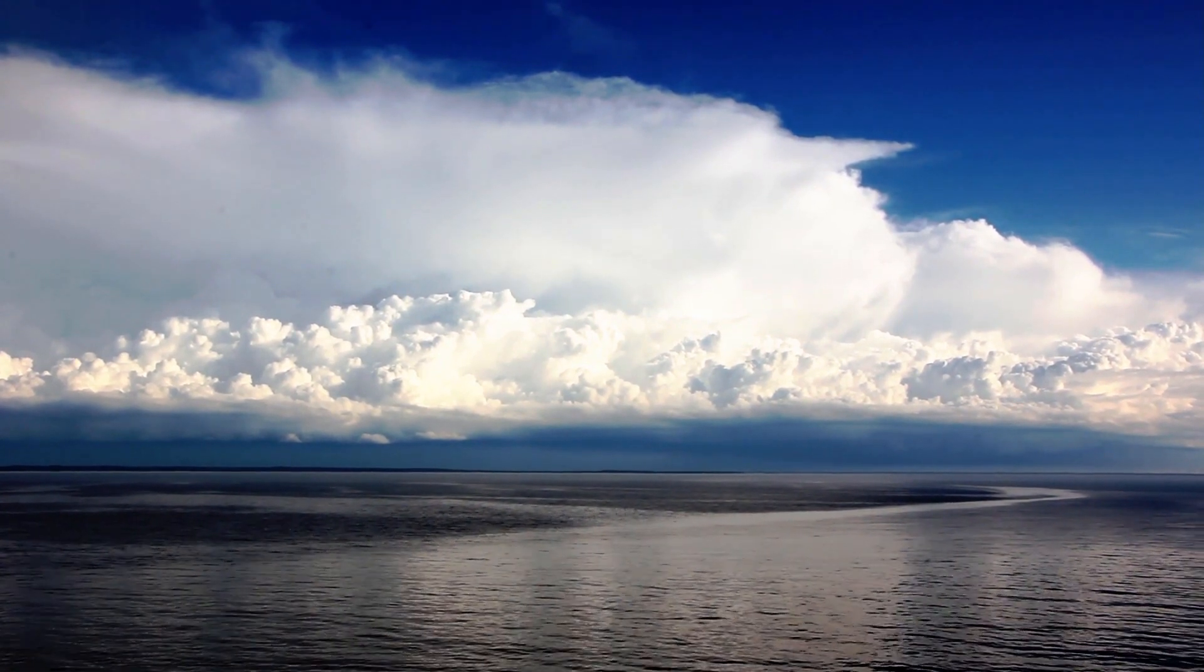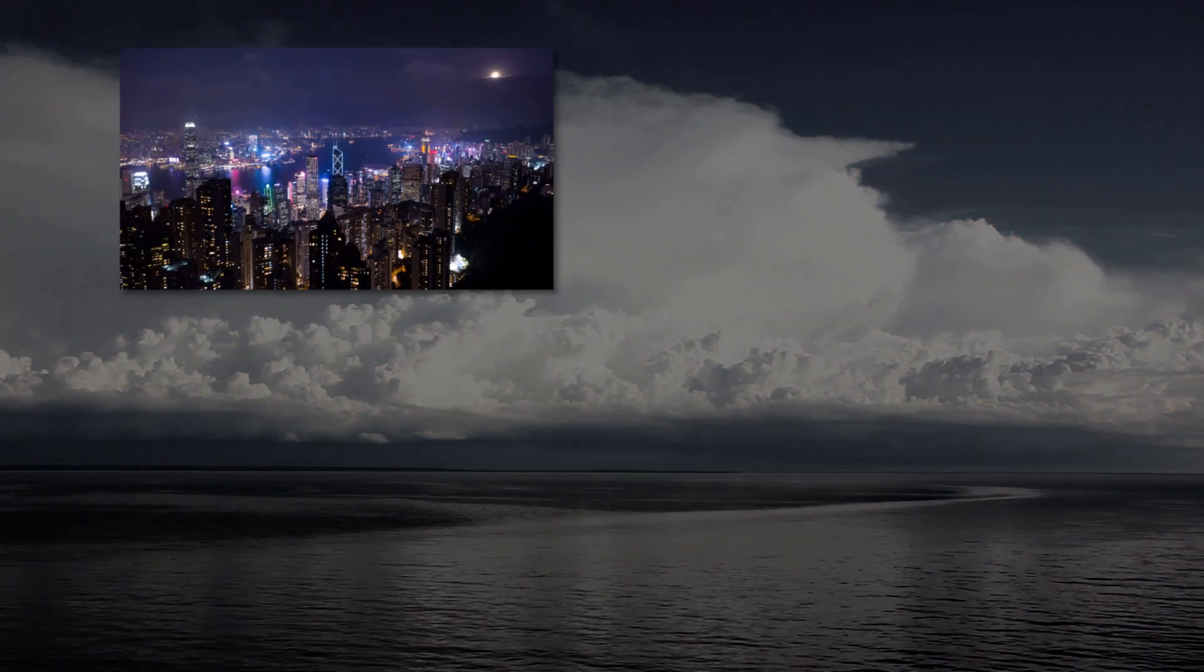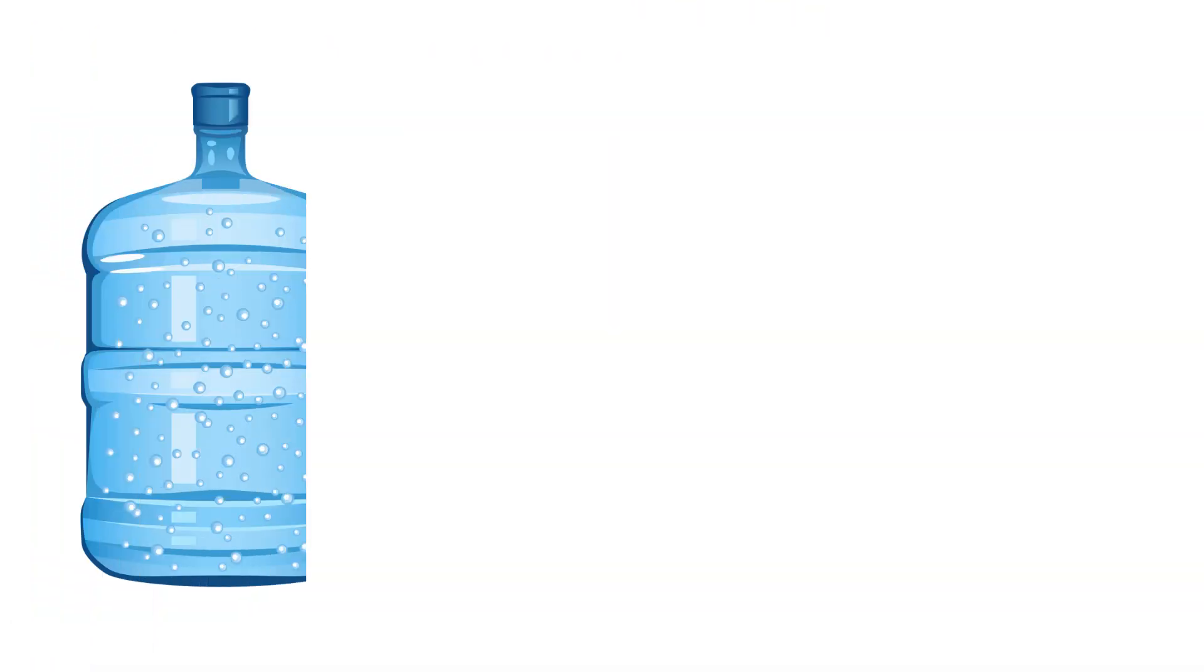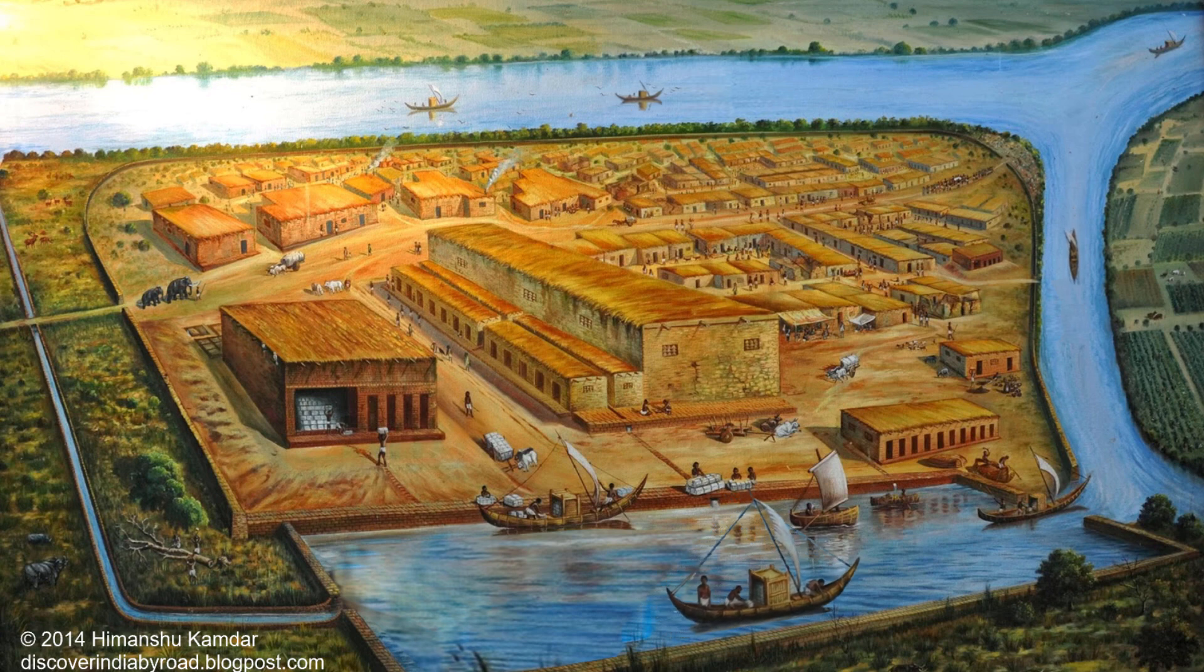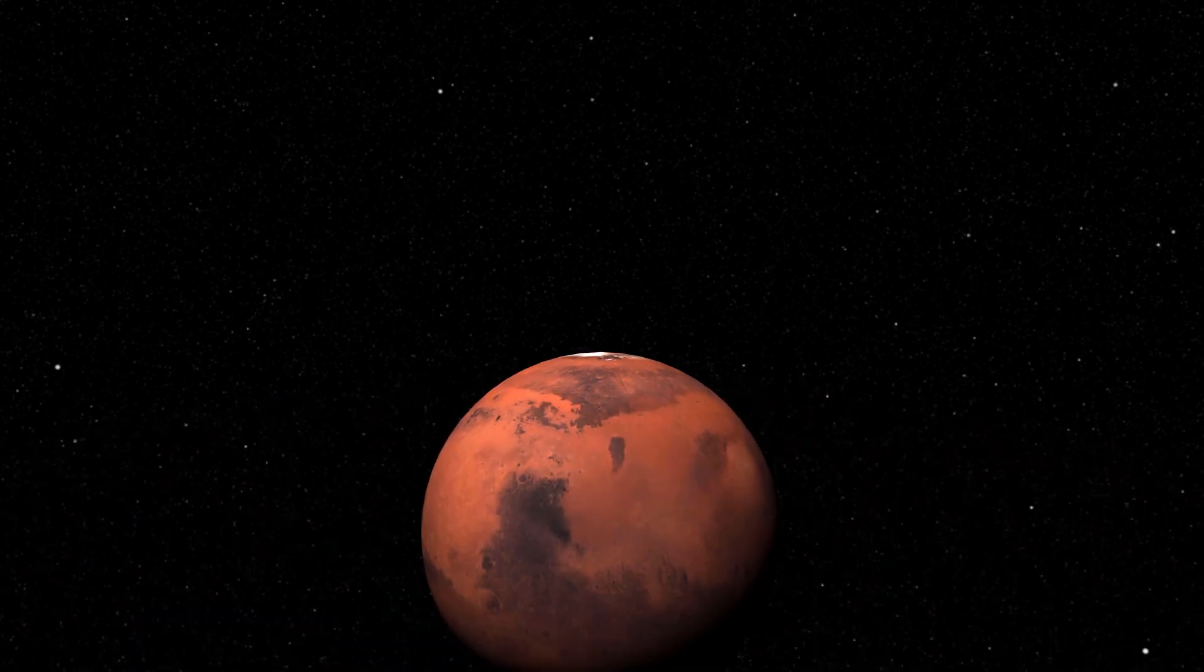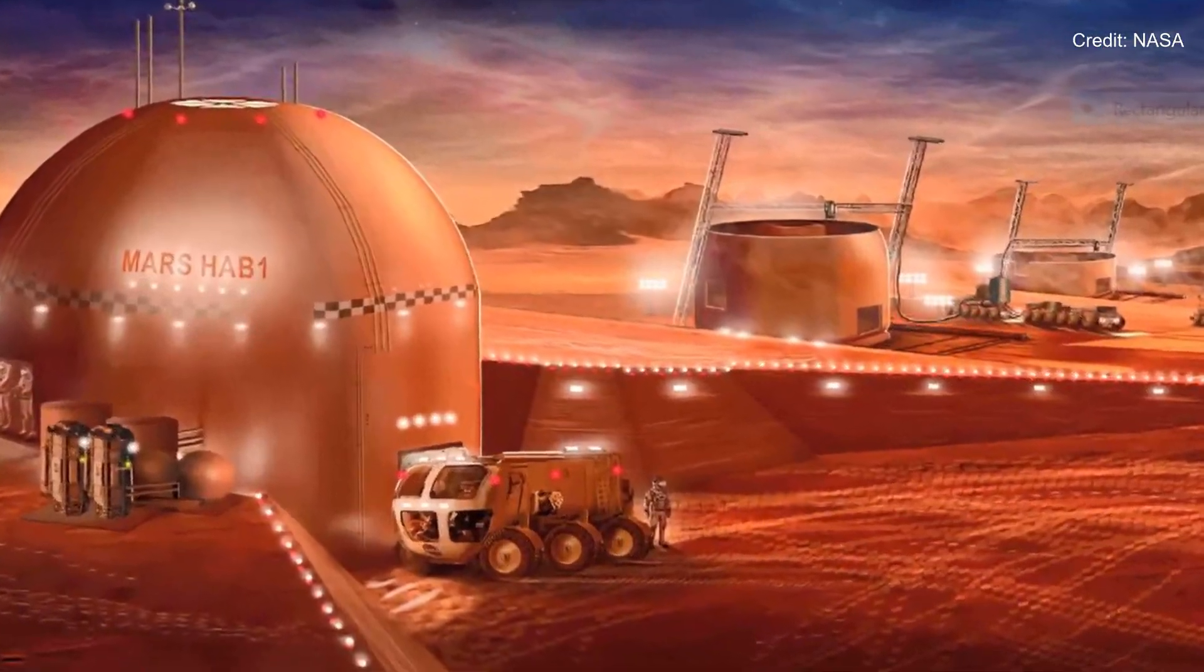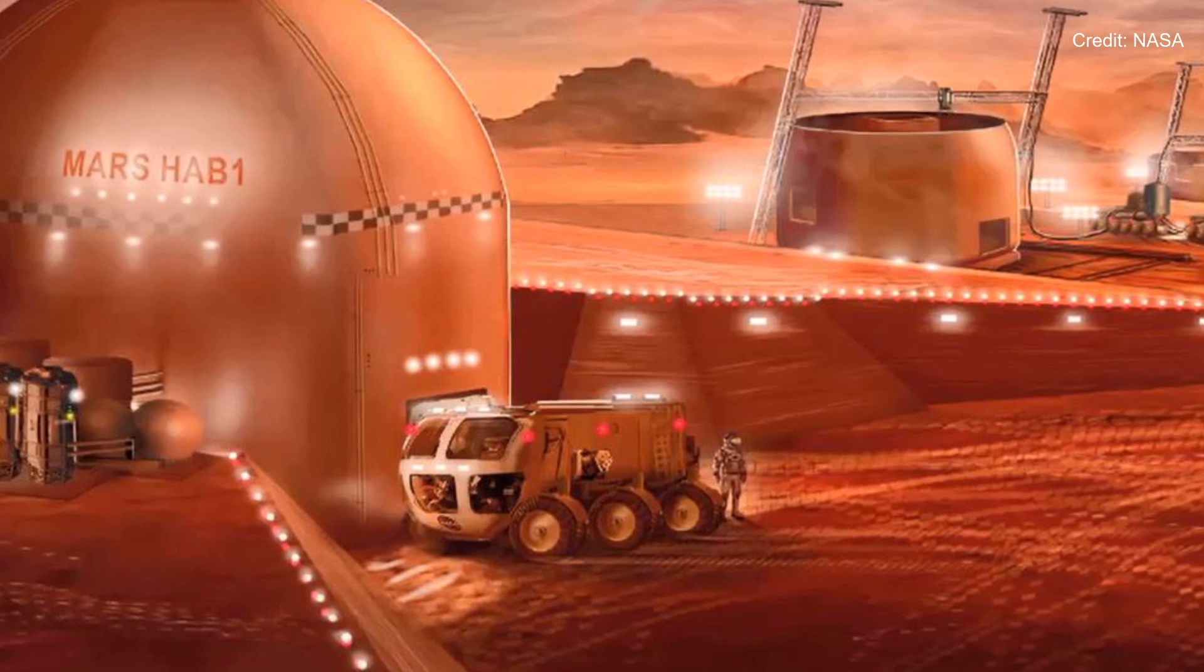Access to large amounts of water is a key requirement for any human settlement. It doesn't matter if it's a big city, a small village, or a research outpost in Antarctica. Water, being fairly dense, requires a lot of energy to transport. So, a human settlement needs to be as close as possible to the source of water.